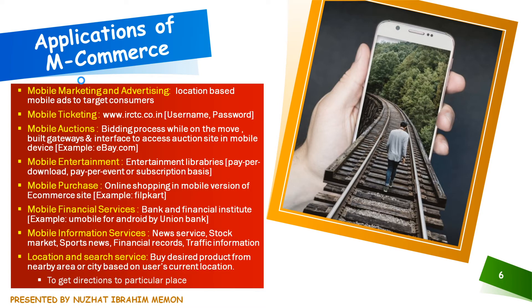Next is mobile auction. We got familiar with the concept of auction in e-commerce. Here, a user while on the move can access an auction site, make a bid, monitor bids, and take timely action on the bidding process. Many auction sites have a bill gateway, which allows the user to pay for goods and services and provides the interface for access to the mobile device through wireless. In our textbook, eBay is shown as an example of an auction site to bid for products on a mobile device.